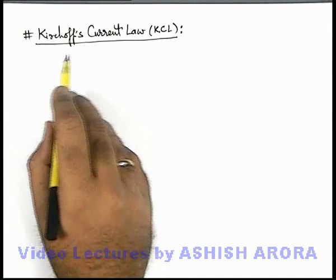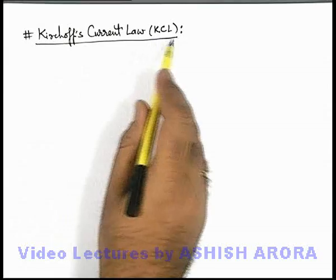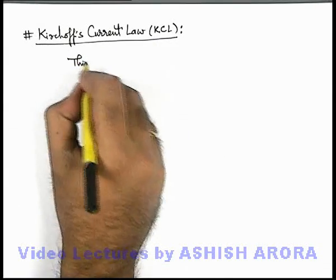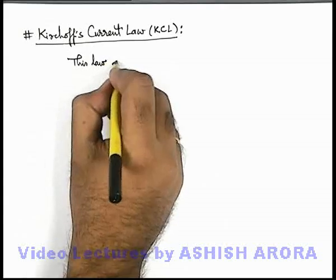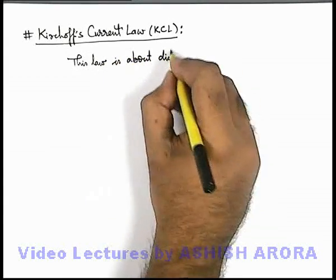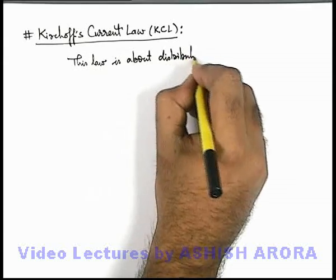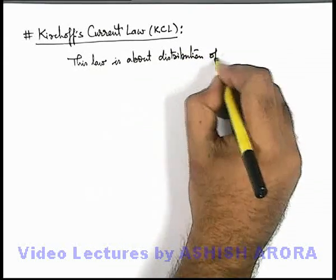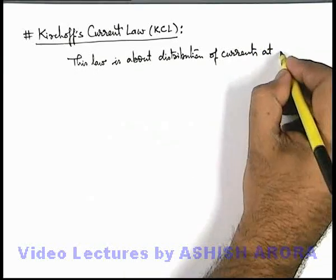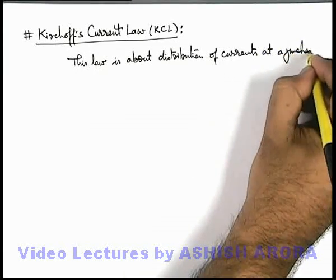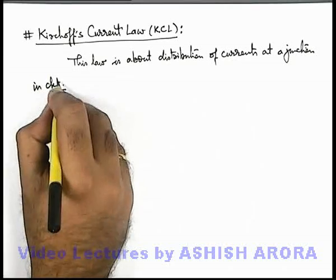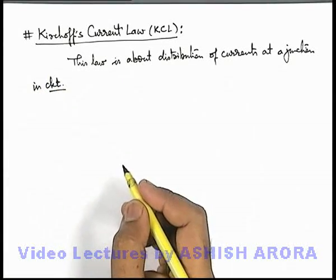Let us study Kirchhoff's Current Law, which is abbreviated as KCL. This law is about the distribution of currents at a junction in the circuit, because we know well that overall charge in a system is always conserved.